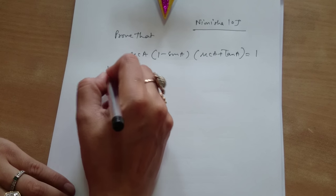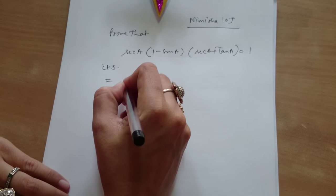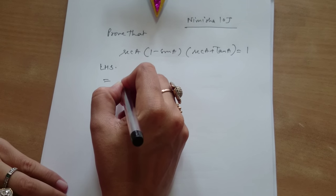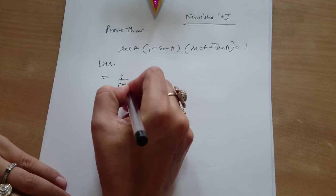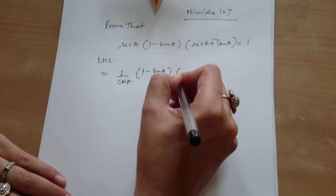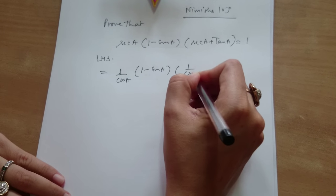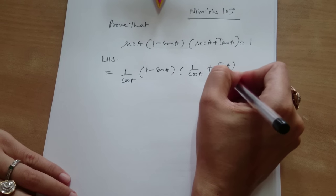First we will take left hand side. We will convert all the identity ratios in terms of cos and sin. Right. So what is secant a? 1 by cos a. 1 minus sin a. And 1 upon cos a, 1 by cos a plus sin a upon cos a.